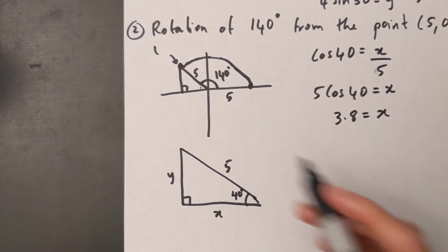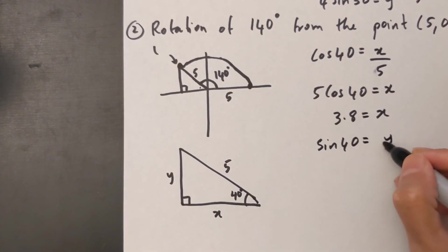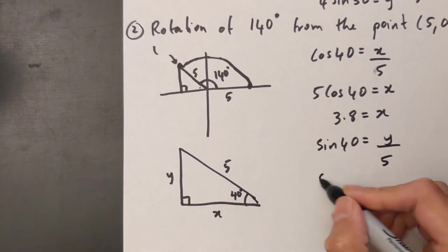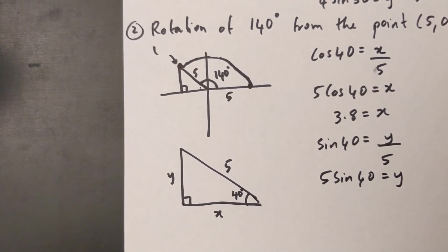Let's do the same for the Y. So sin 40° equals Y over 5. 5 sin 40°—I'm cross multiplying it on the top. I'll put this in my calculator. I'll get 3.2 equals Y.